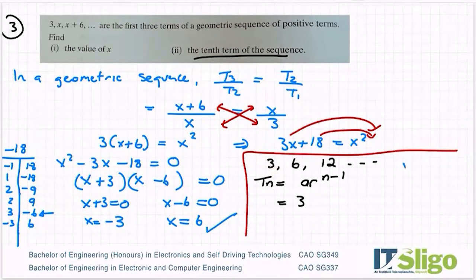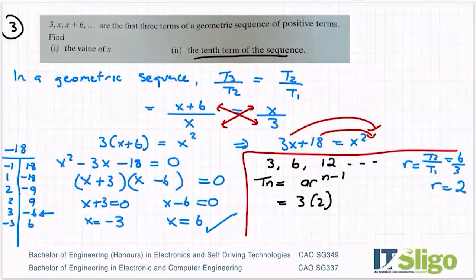What is r? Well, r is equal to T2 over T1. Remember what we said r was - T3 over T2, it doesn't really matter. So it's 6 over 3. So r is equal to 2. Okay, so my r is 2 to the power of n minus 1.